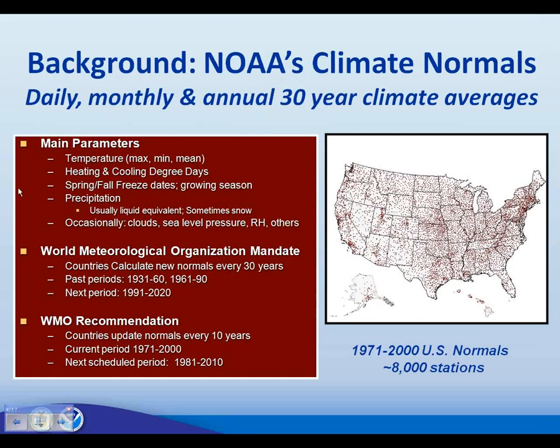This is a background slide from the 1971–2000 normals, to give a sense of normals in general and what was done last time. The main parameters are temperature — that's max, min, and mean — heating and cooling degree days, spring and fall freeze days, growing season length, precipitation, snowfall. We've also done clouds, sea level pressure, relative humidity, and more in the past.